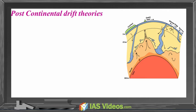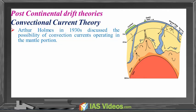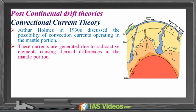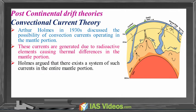Post-Continental Drift Theories. Convectional Current Theory. Arthur Holmes in the 1930s discussed the possibility of convection currents operating in the mantle portion. These currents are generated due to radioactive elements causing thermal differences in the mantle portion. Holmes argued that there exists a system of such currents in the entire mantle portion. This was an attempt to provide an explanation to the issue of force on the basis of which contemporary scientists had discarded the continental drift theory.